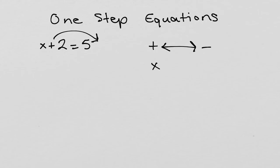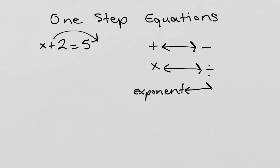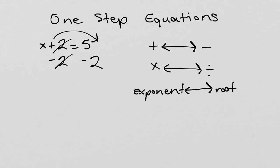The opposite operation of multiplication is division. The opposite operation of exponent is root or radical. We know the opposite operation of addition is subtraction, so we will subtract 2 from both sides. Once the opposite operation is done, those two numbers simply cancel out. So here, the 2 cancels out. 5 minus 2 is 3, so x will be equal to 3.